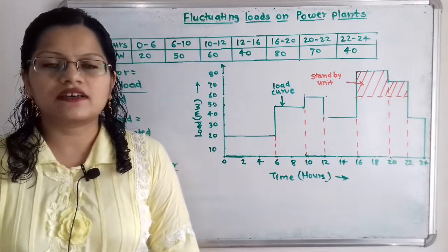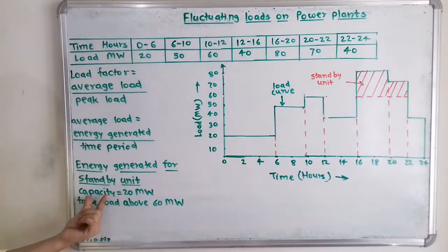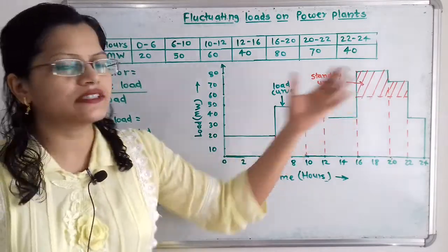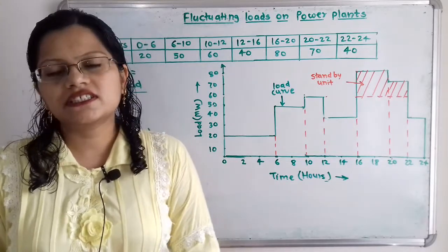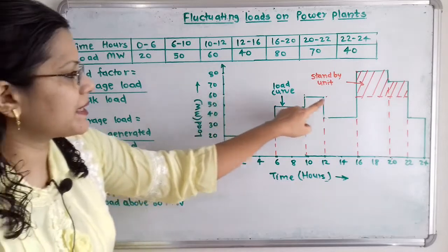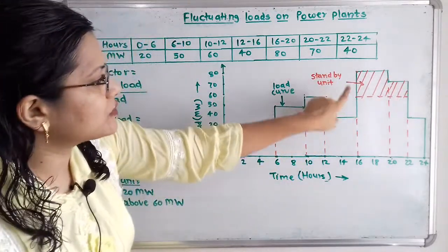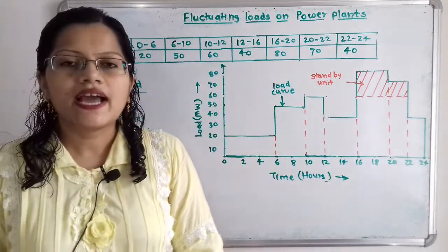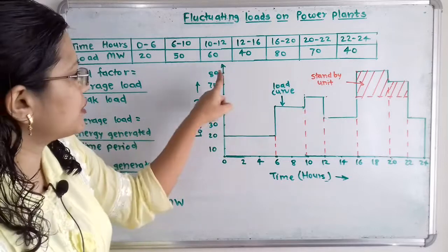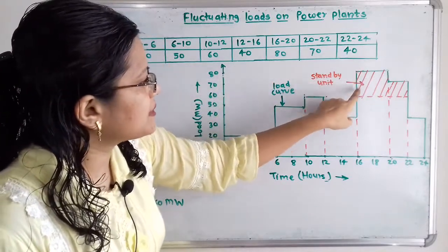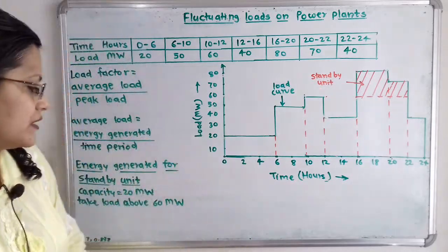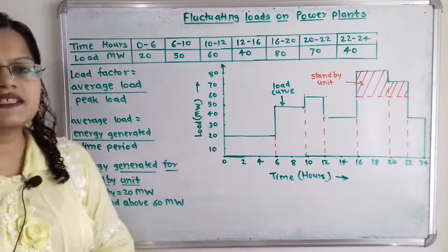Now we calculate the load factor for the standby unit. The capacity of the standby unit is 20 megawatt and it takes all load above 60 megawatt. We highlight the area on the load curve above 60 megawatt — since its capacity is 20, it takes load from 60 up to 80 megawatt. The highlighted area between 60 and 80 megawatt represents the energy generated by the standby unit.